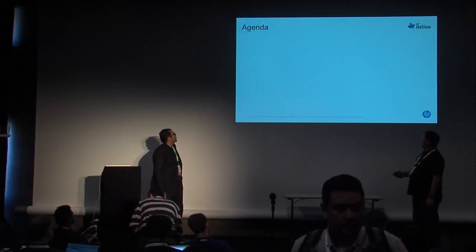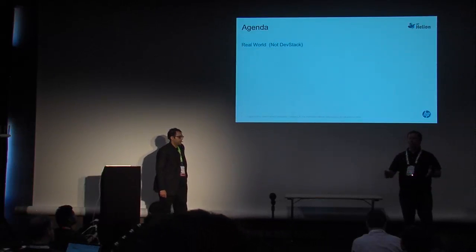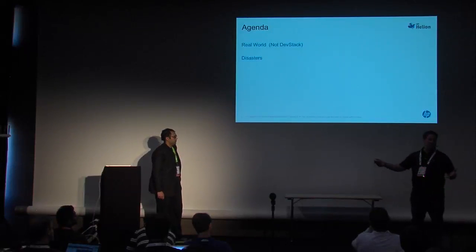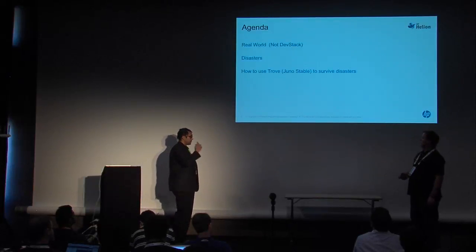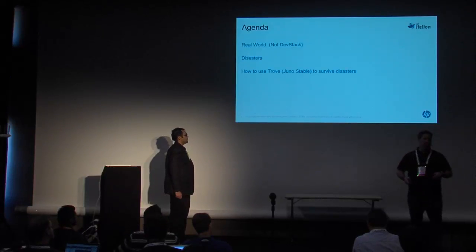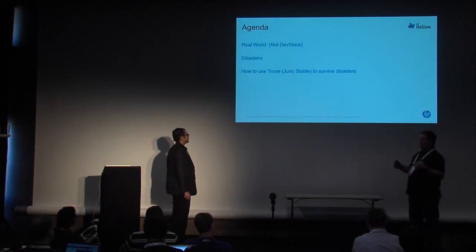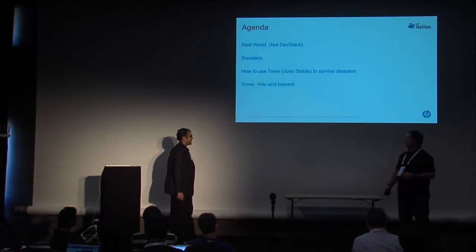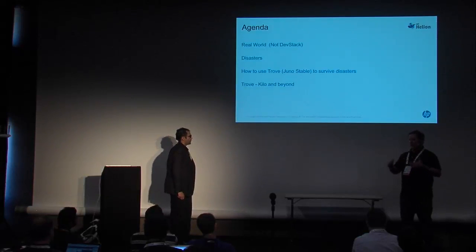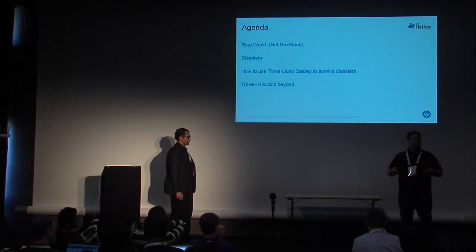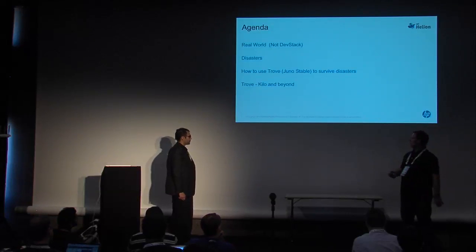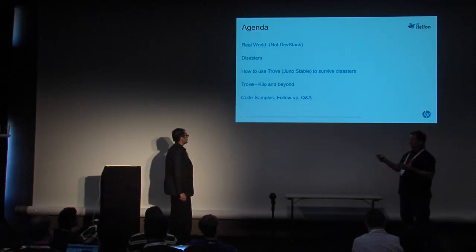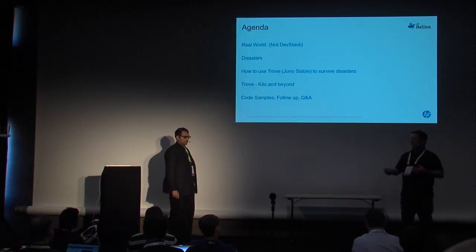We'll jump right in — here's our agenda today. We're going to talk about the real world, and that is explicitly not DevStack. We're going to talk about disasters. We're going to talk about how to use Trove in Juno, stable upstream code, to survive disasters. Nikhil will talk a little bit about Trove with Kilo and beyond. We're going to show a bunch of code today, and talk about how the code gets upstream. All the code samples we showed today are going to be available on GitHub, and we'll do Q&A.